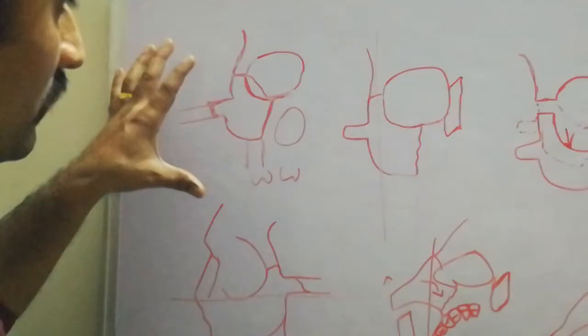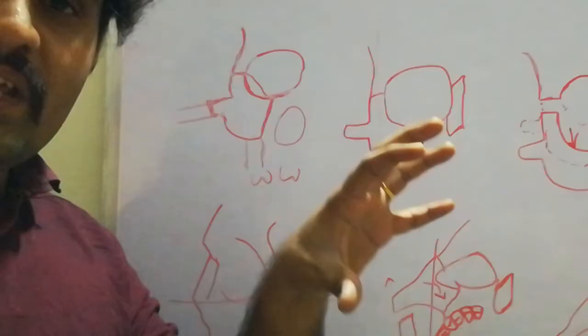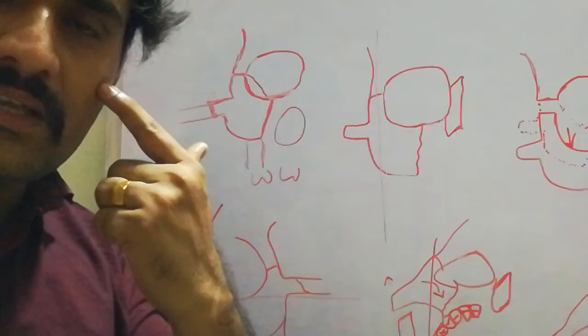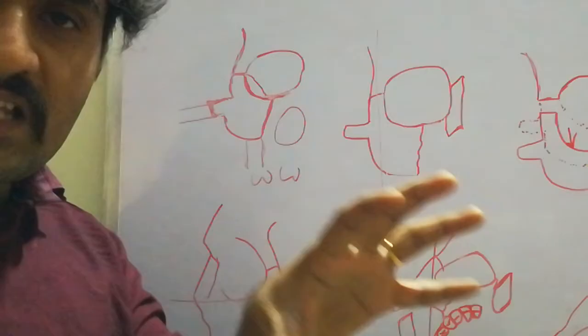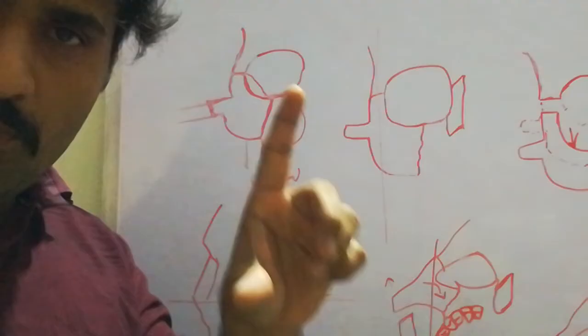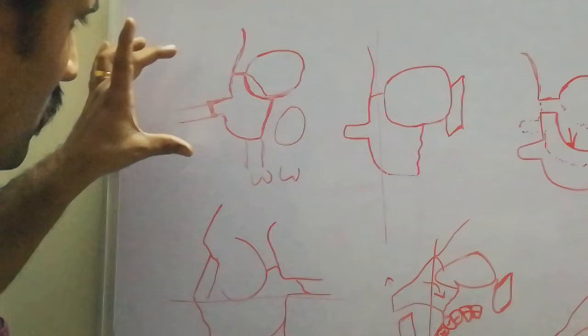The zygomatico-maxillary buttress transports forces from the maxillary teeth to the temporal and frontal bones. The zygomatic bone plays a very important role in facial aesthetics because it is the most prominent structure — the zygomatic or malar prominence. It is responsible for the anterolateral projection of the face. This concludes the normal anatomy of the zygoma.